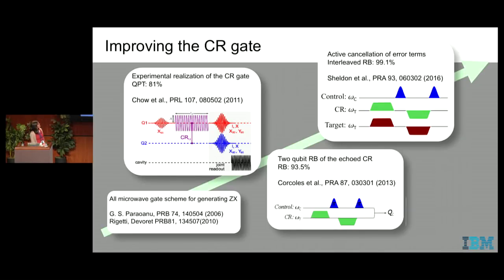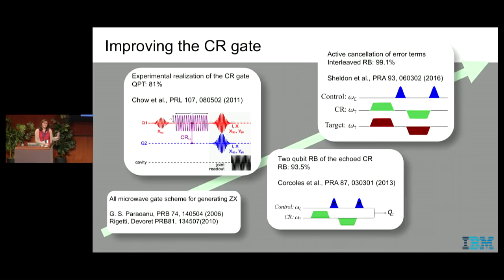Back in 2011, there was the first experimental demonstration using the cross-resonance gate. Back then, you just used a single cross-resonance pulse, and the fidelity was on the order of 81%. But over time, we've implemented an echo sequence, and most recently have done an active cancellation — the same echoing sequence but with active cancellation to cancel out extra terms in the Hamiltonian. The cross-resonance gate has this ZX term, but there are other terms we don't want when making a CNOT gate. With that, we have reached 99.1% gate fidelity, looking at interleaved randomized benchmarking.